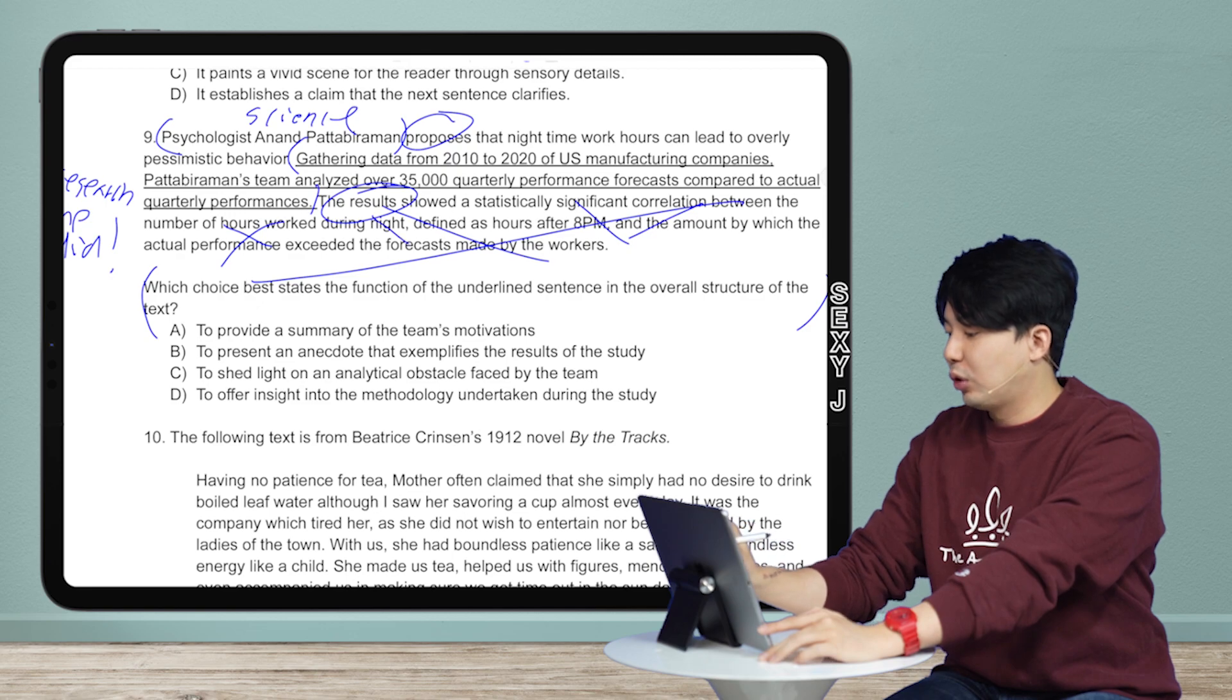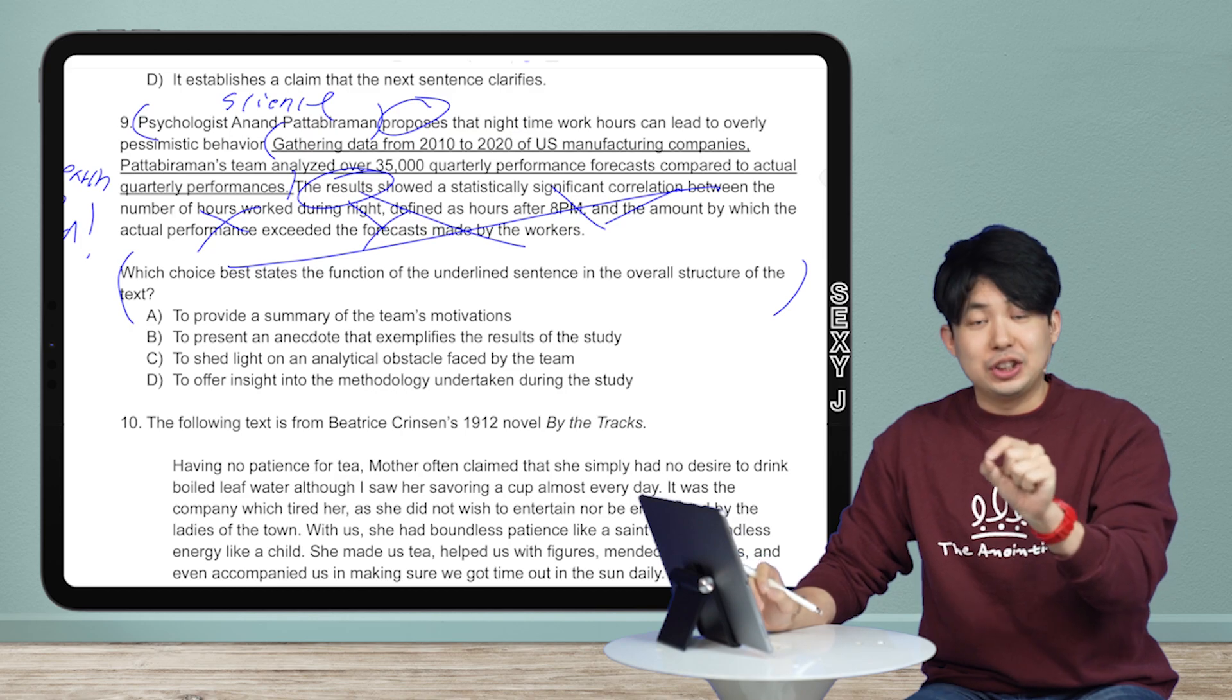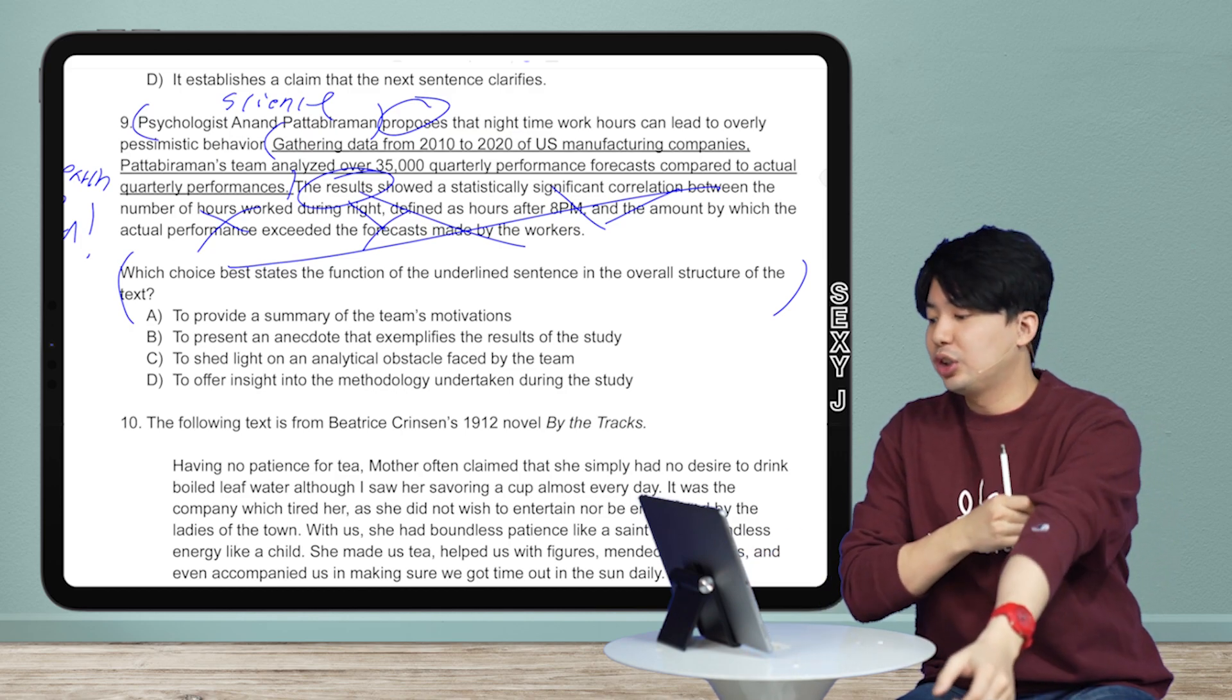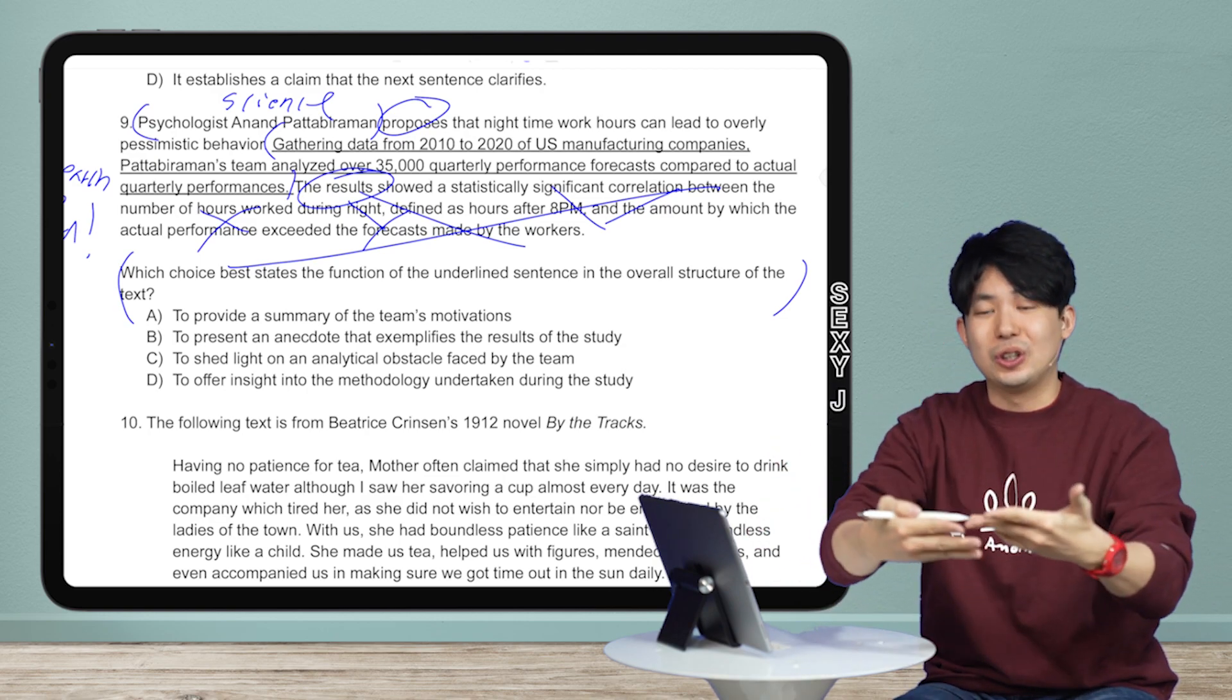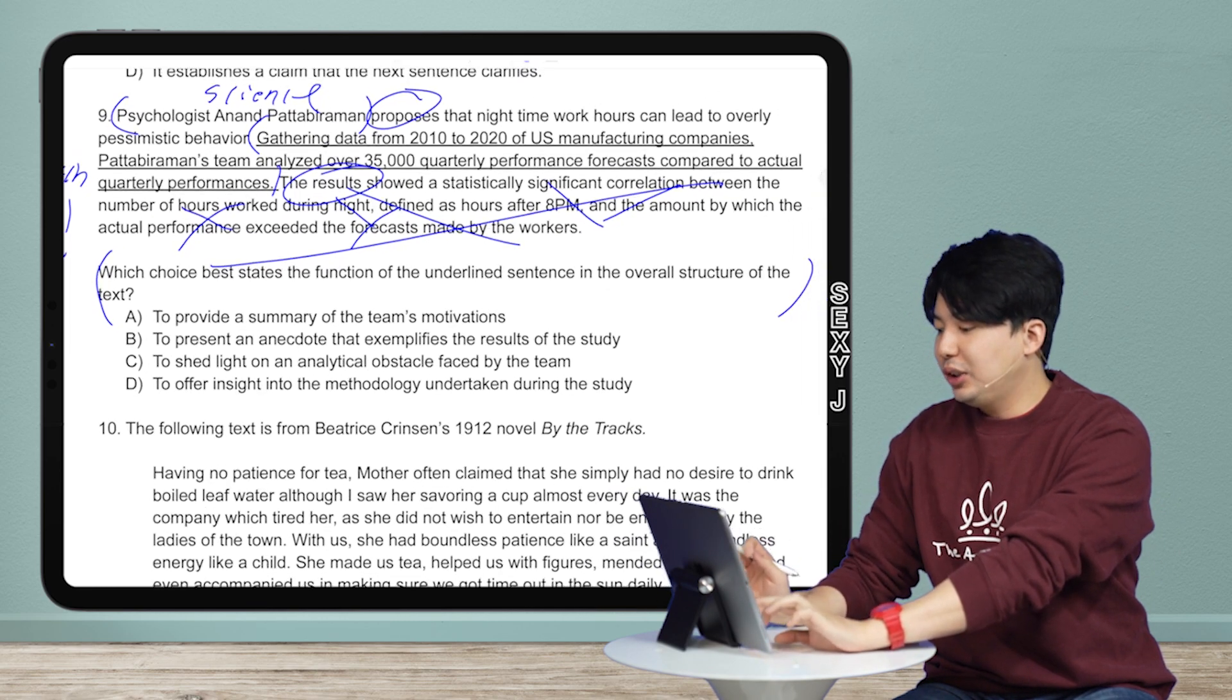So again, I don't care about the details. You do not need to read this at all. As I said, it pains me to cross all of this out because I made it, but you don't need it. So in my own head, like I said, in my last video, paraphrase. What do you have to do? What is the purpose of the sentence? He's saying he did research. That's it. He's saying he did research. This is the research. I have that in my head. He did research. And let's look at the answer choices.